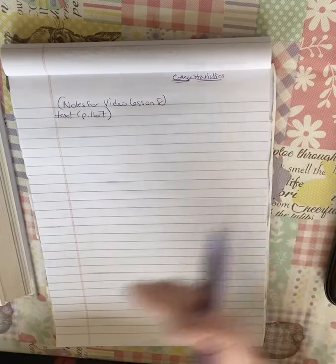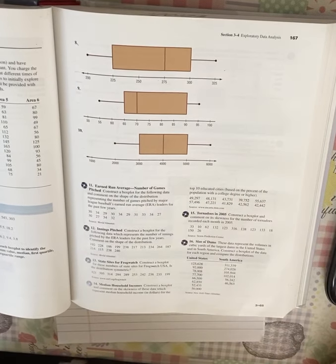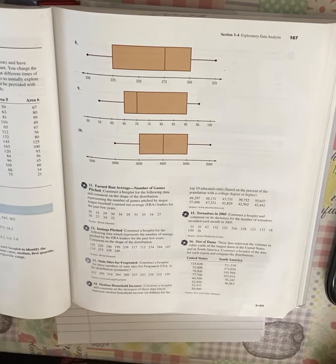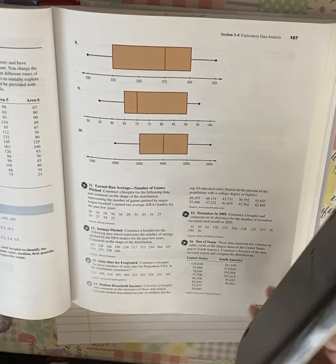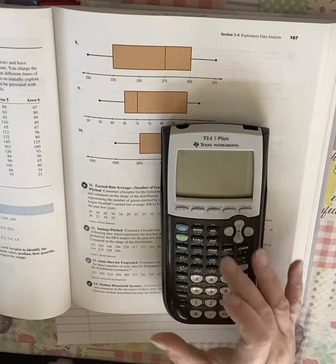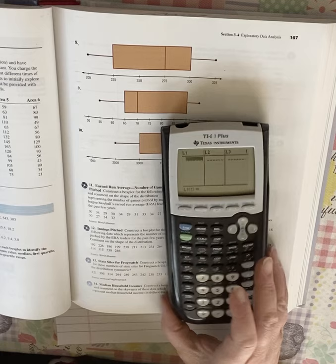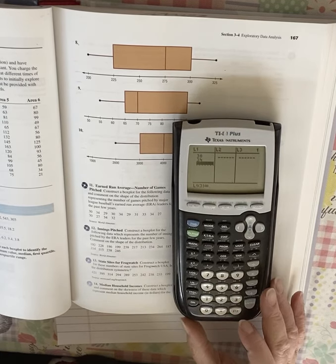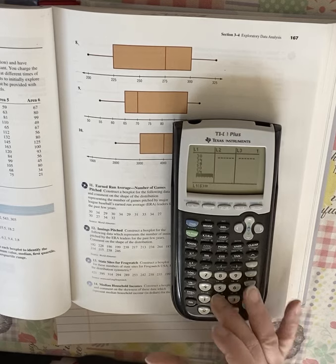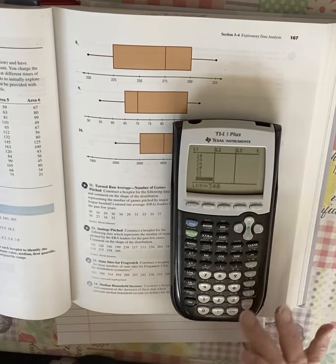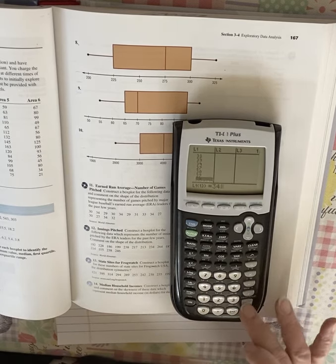All right. So let's go through the homeworks. 11, 12, 15, and 16. So 11, we have construct a box plot for the following data. Comment on the shape. All right. So this is the number of games pitched by major league baseball's earned run averages, your ERAs for the past few years. It is real data. Excuse me, but it is extremely old data. So here we go. I'm going to enter them in. Hopefully you guys are doing okay with meta calculator.